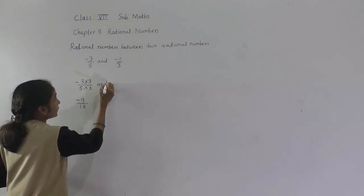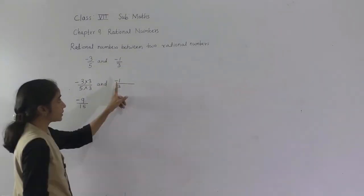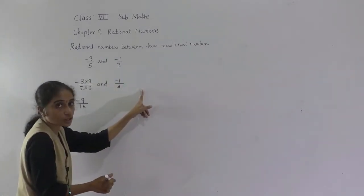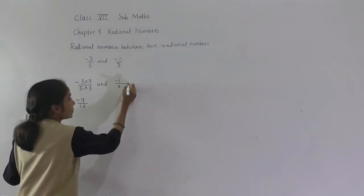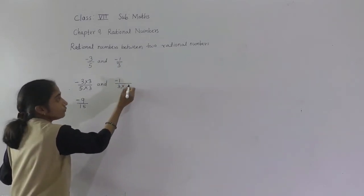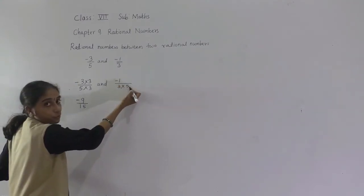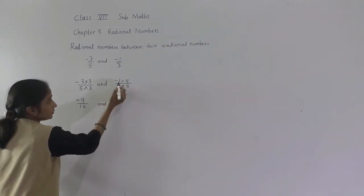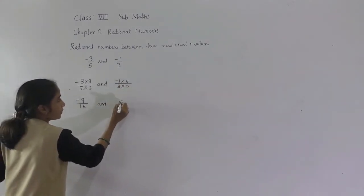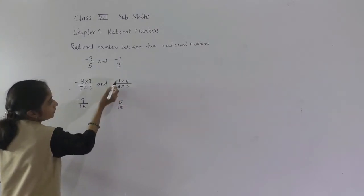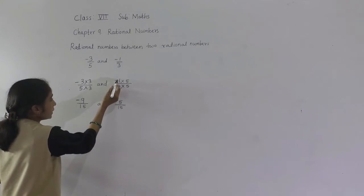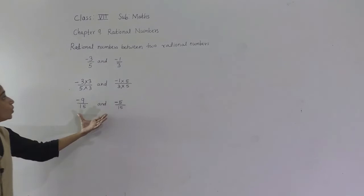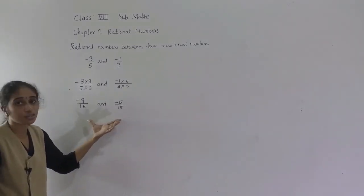For minus 1 upon 3, multiply both numerator and denominator by 5 to get denominator 15. 1 fives are 5, 3 fives are 15. Since one number is negative and one is positive, the result is negative: minus 5 upon 15.